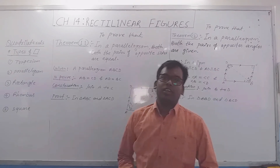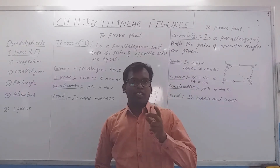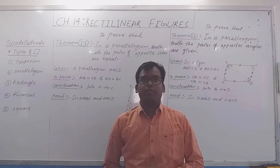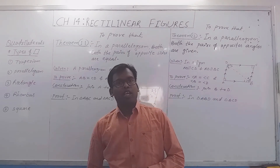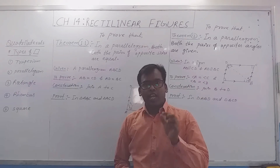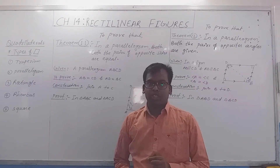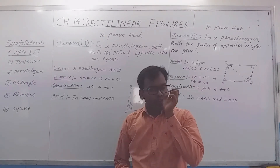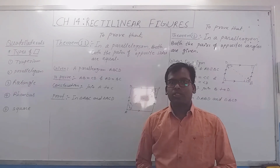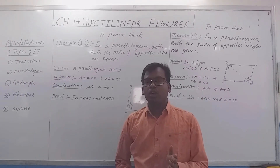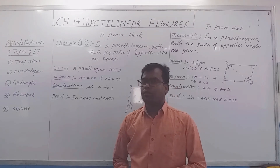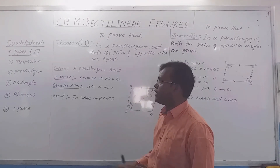Hello everyone. Today is the second class of the chapter rectilinear figures. Today I am going to start with some related types of quadrilaterals. These types of quadrilaterals we have already learnt up to class 7, so all of you try to recall what is given in your textbook. Let me explain what the types of quadrilaterals are.